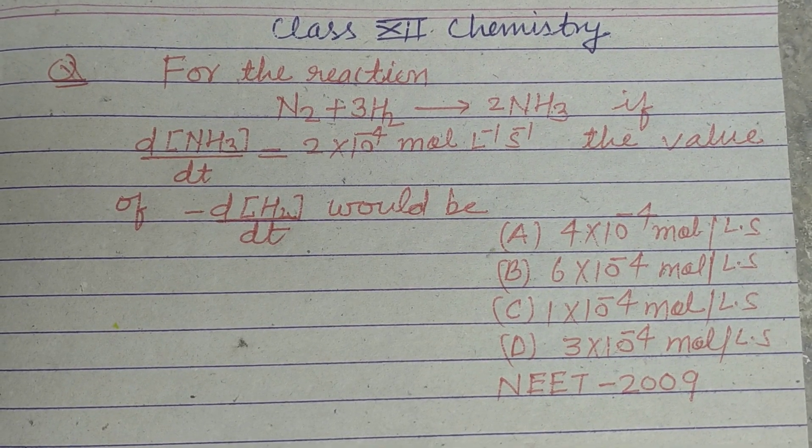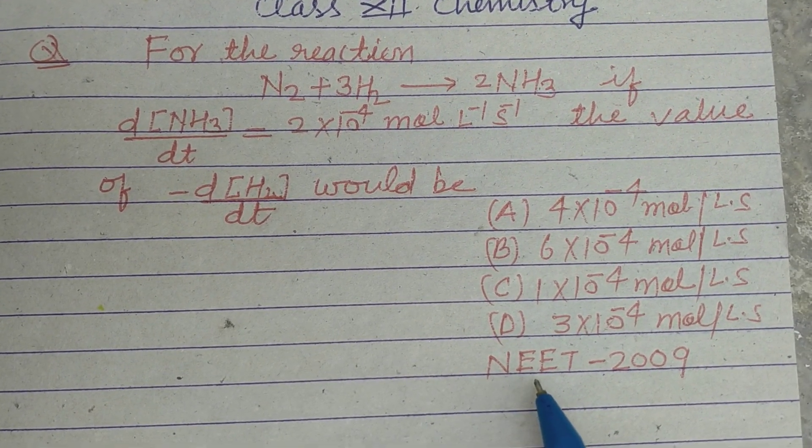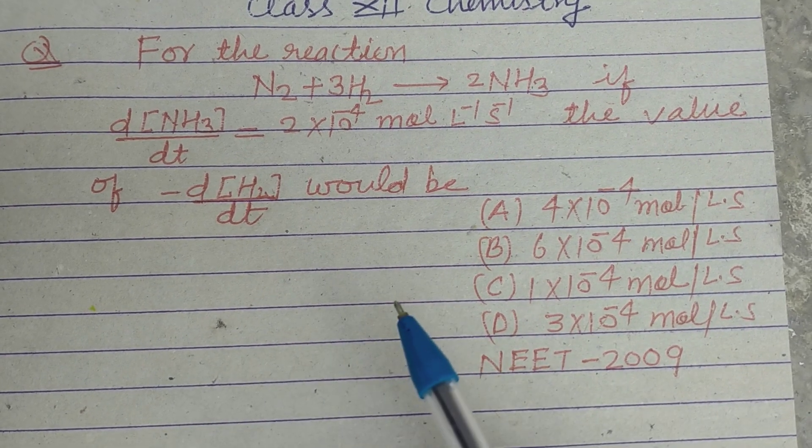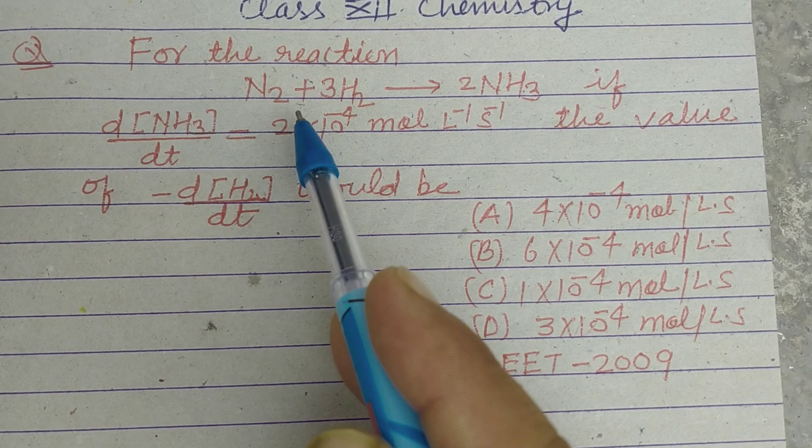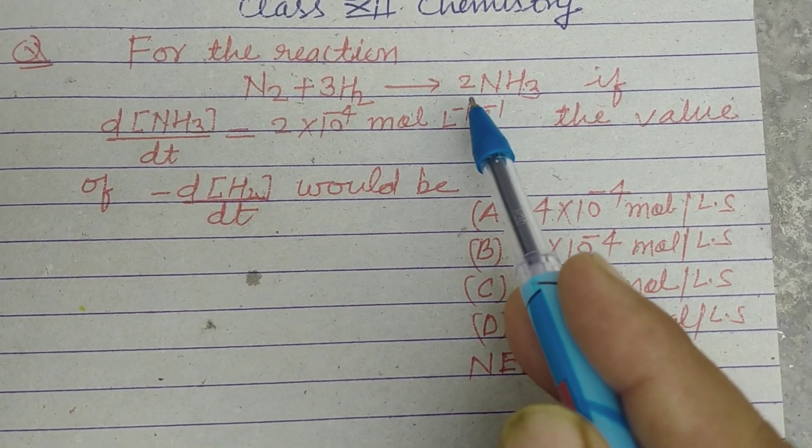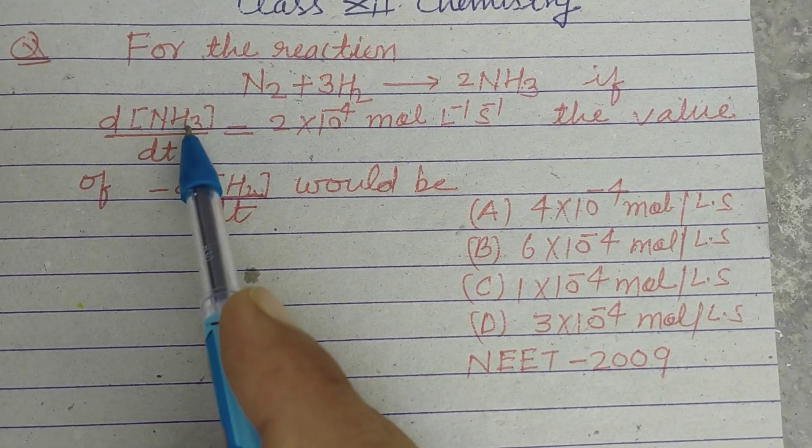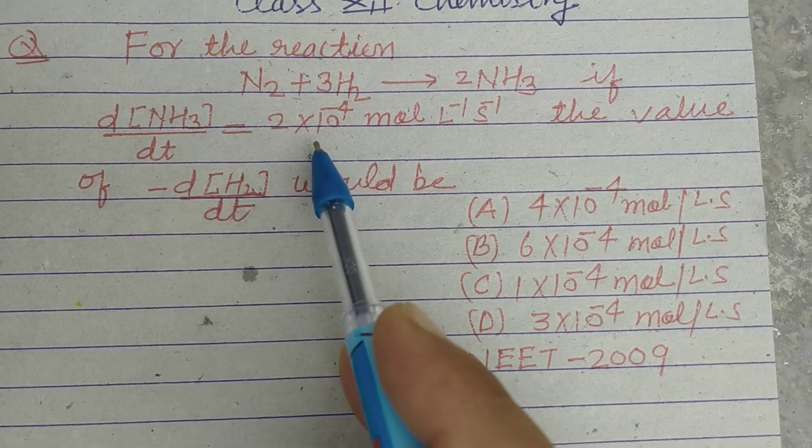Hello student, warm welcome to this YouTube channel. This is a question from NEET 2009 based on chemical kinetics from Class 12 chemistry. For the reaction N2 + 3H2 gives rise to 2NH3, if d[NH3]/dt is given...